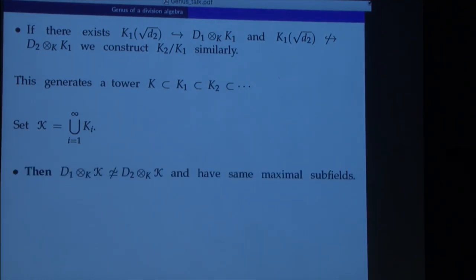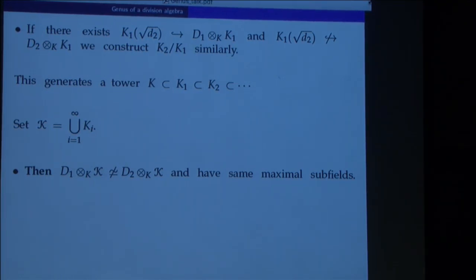By our construction, the algebras remain non-isomorphic over the limit field — if they became isomorphic, this would happen at some finite stage, but by construction they will have the same maximal subfields. Here one is moving back and forth between D1 and D2 infinitely many times. This is how you construct this field so that very concrete division algebras that were non-isomorphic remain non-isomorphic but will have the same maximal subfields.